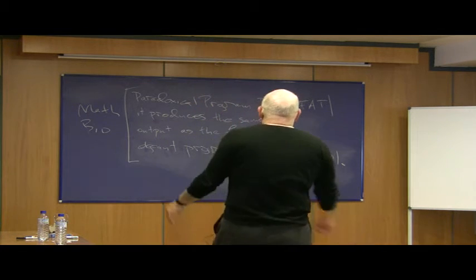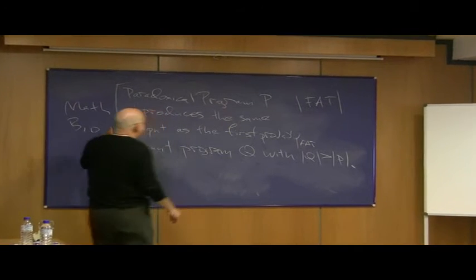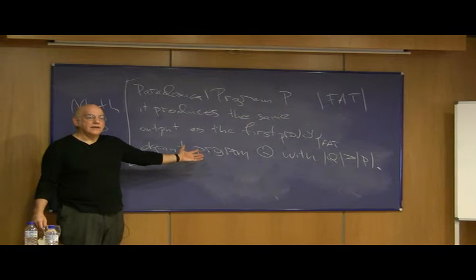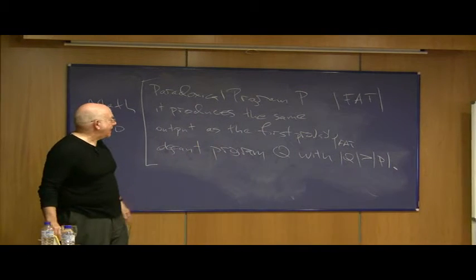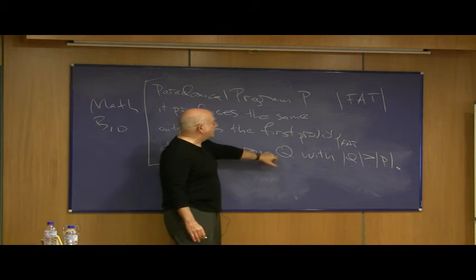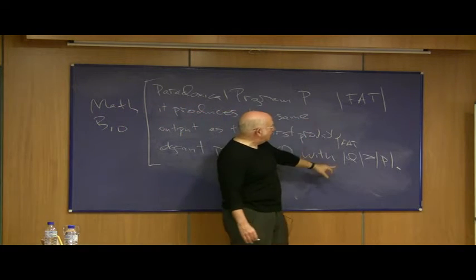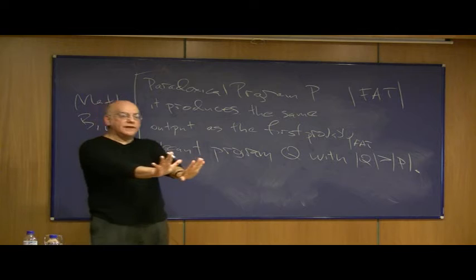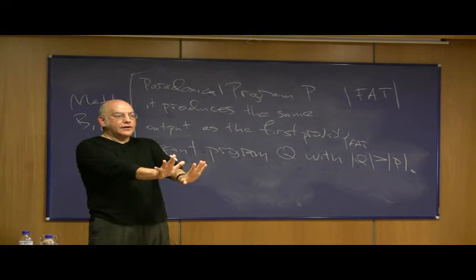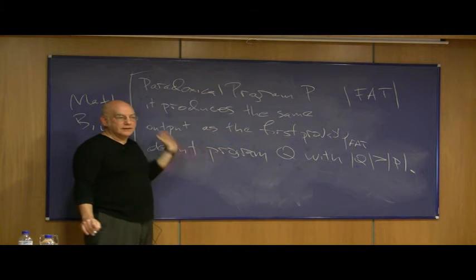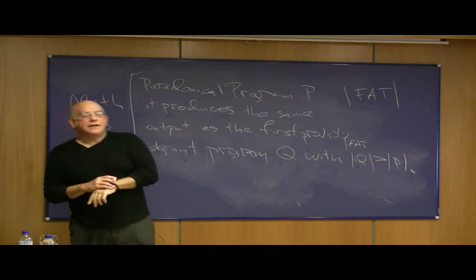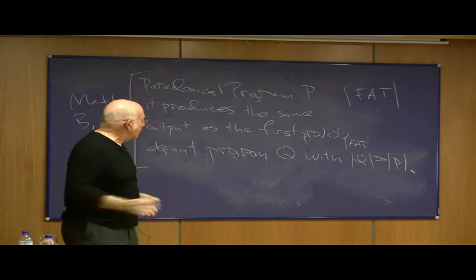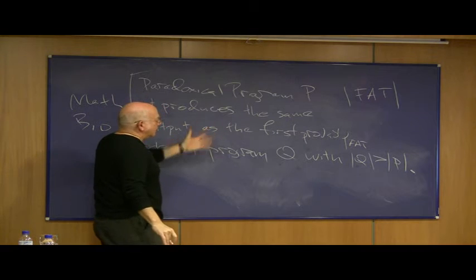The way you get out of trouble is: this program P will never find Q. Program P will actually never finish and will never calculate anything, because there is no provably elegant program Q in your formal axiomatic theory whose size in bits is greater than the size in bits of this program P. The size in bits of this program is an absolute barrier to proving that individual programs are elegant. So the question is: how big is this program P in bits?